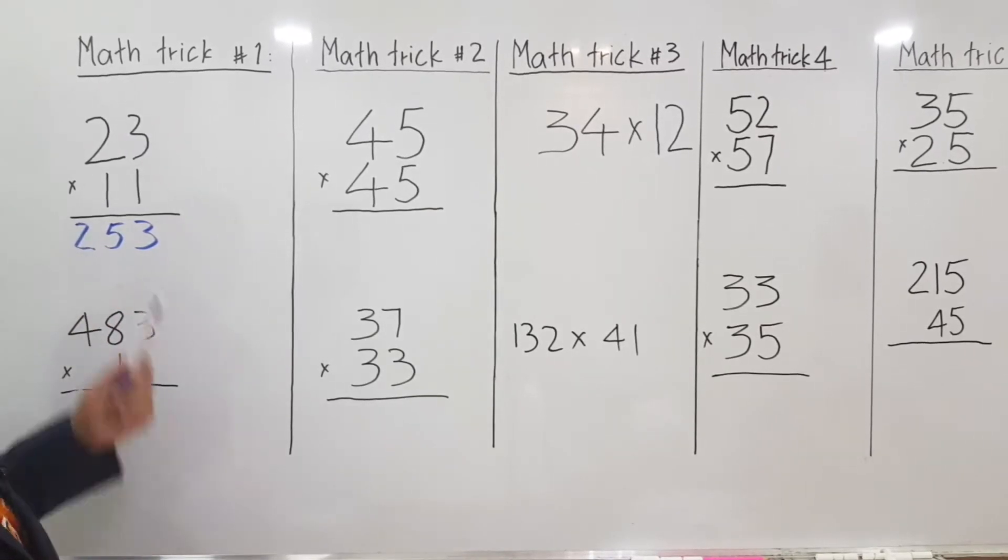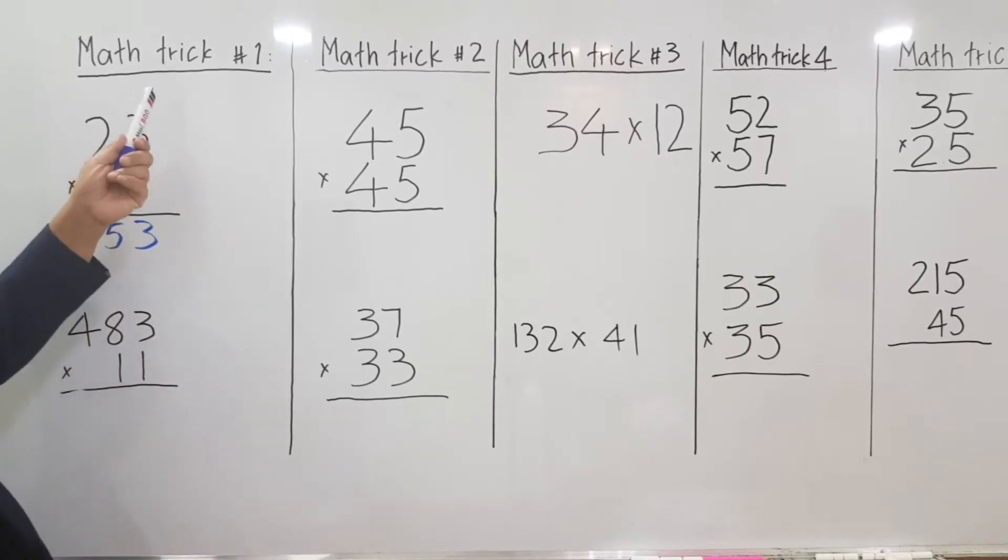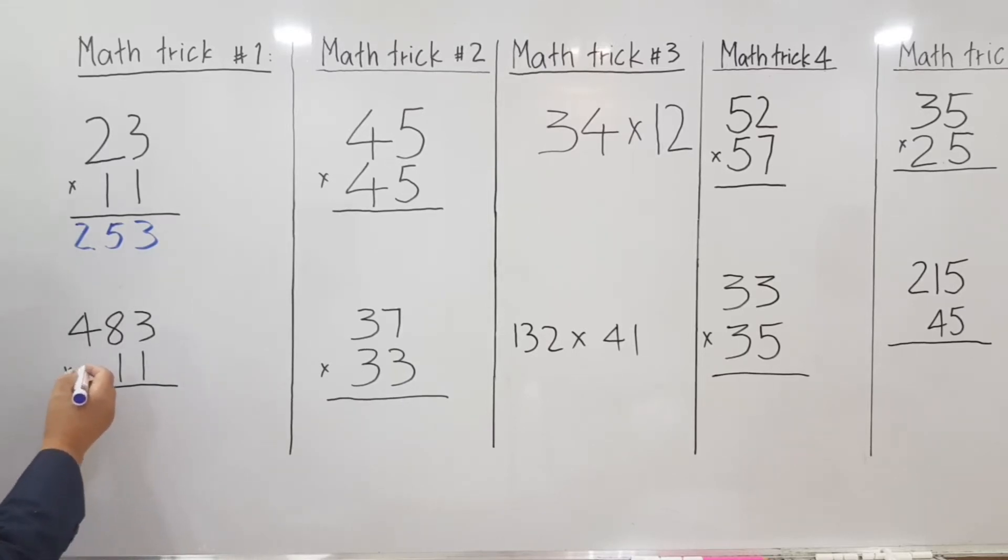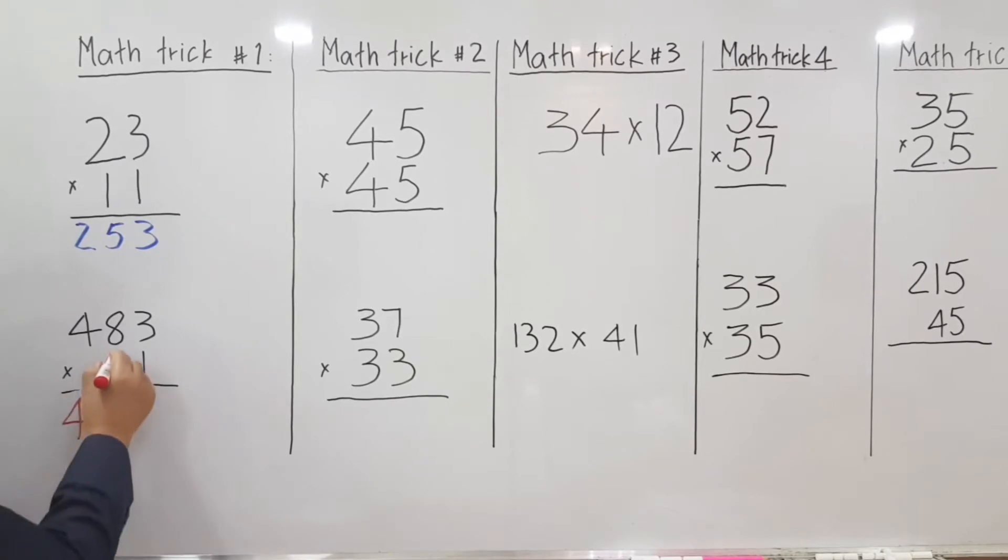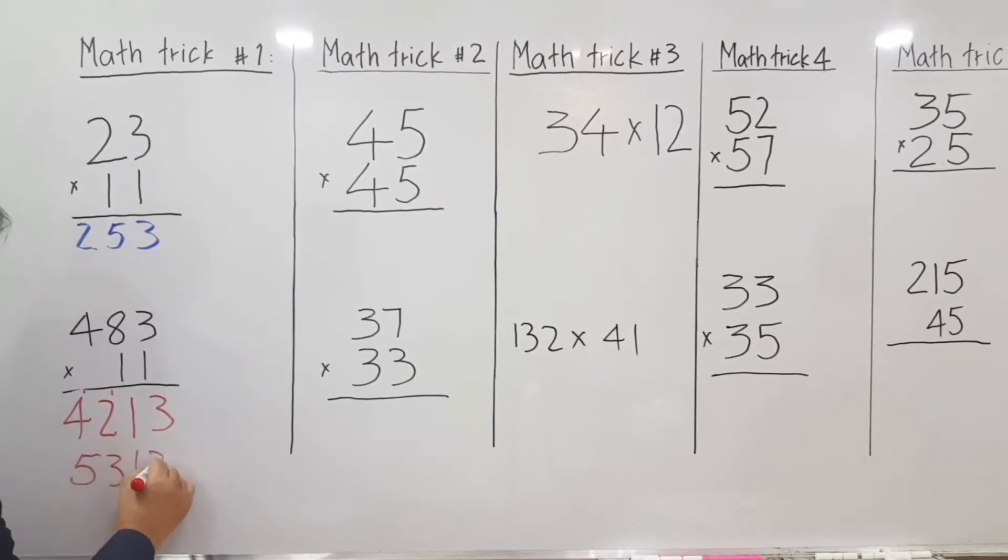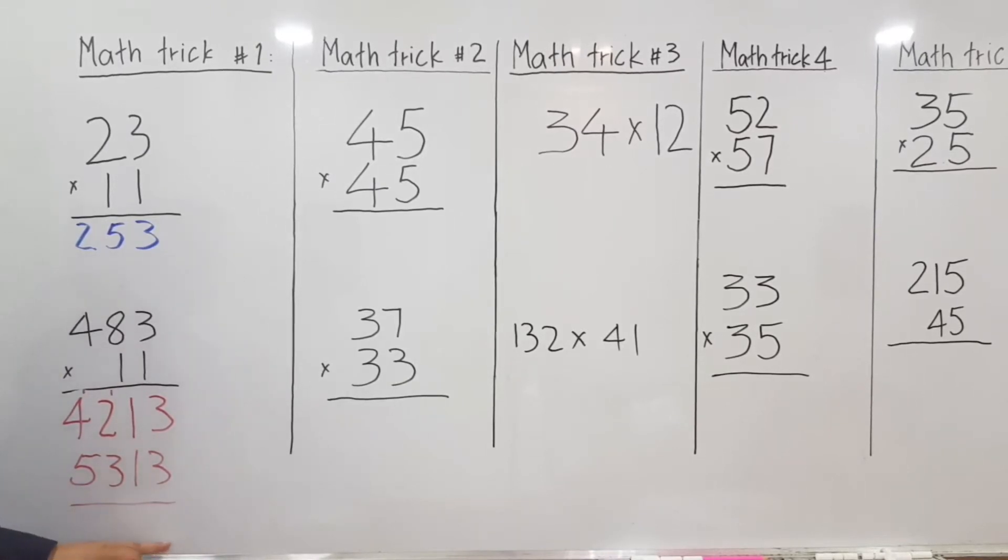This is our first sample. Second sample with this matrix number 1 is also multiplying by 11. We have 3 digits multiplied by 11. Just lower down 4, and then 4 plus 8 is equal to 12, so carry the 1 here. 8 plus 3 is equal to 11. Carry the 1 here and lower down the 3. The final answer is 5,313. Madali lang, di ba?